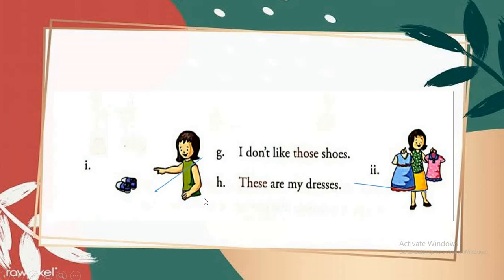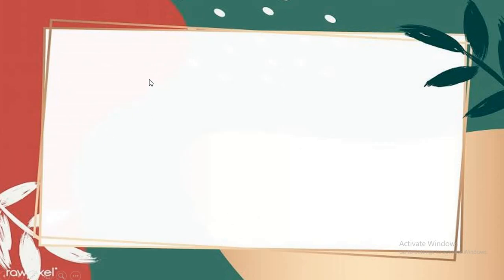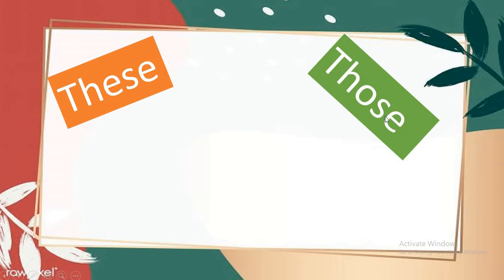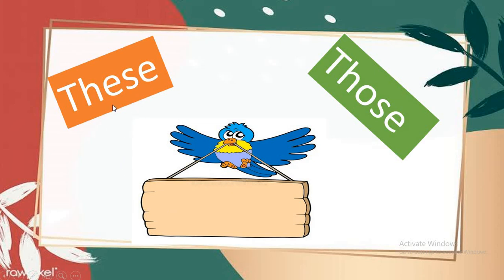I hope you all have understood what I taught today. We learned the use of 'these', T-H-E-S-E, to show many things which are near. And we also learned 'those', T-H-O-S-E, used to show things far away and which are many. You all have understood the use of 'these' and 'those'. Read chapter 1 and do your homework. Be safe at home. Thank you all.